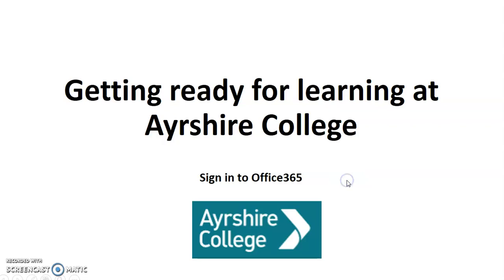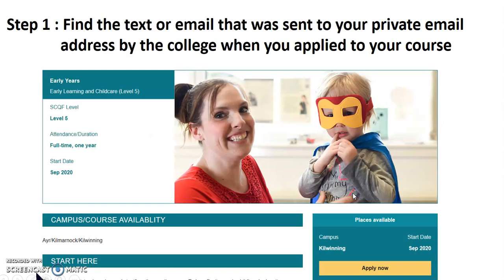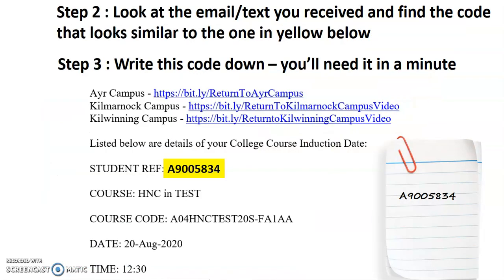The first thing you need to do is go to your private email address. I want you to find an email or a text that was sent to you from the college after you applied for your course, because when you clicked that 'Apply Now' button, we sent you a response. In that response, sent to your private email address, you will find some characters that we need to get into Office 365. I've highlighted those characters in yellow on the screen, so the correspondence you received from the college probably looks a little bit like this, mentioning your student reference and the course you've applied for.